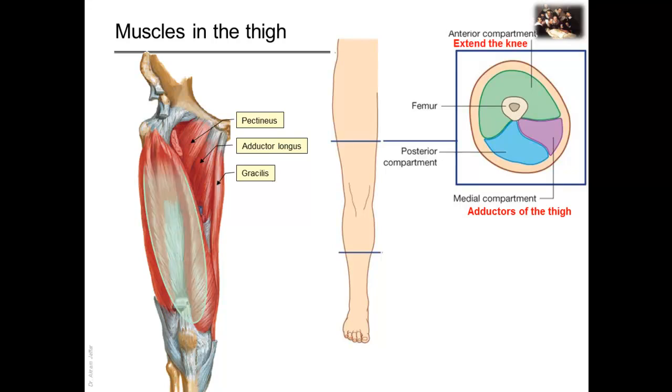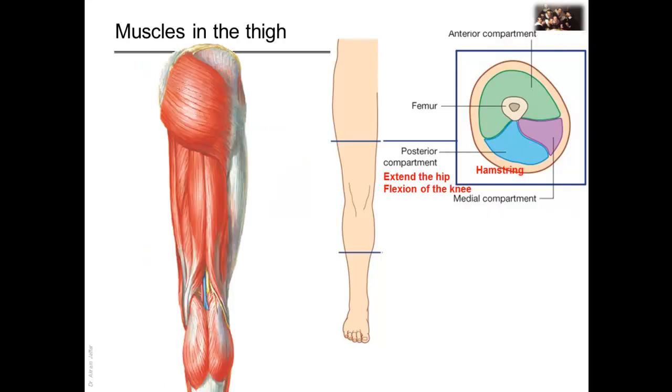Muscles in the anterior compartment predominantly extend the knee, and the biggest is the quadriceps femoris muscle. In the posterior compartment, the large muscles are called hamstring muscles, and they act on the hip, causing extension of the hip and flexion of the knee. So most of them act on the hip and the knee.